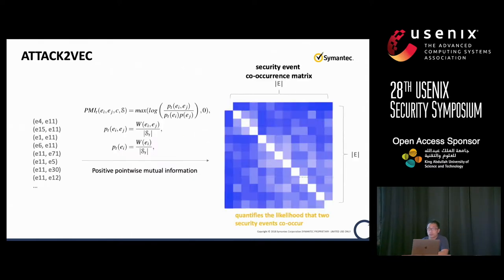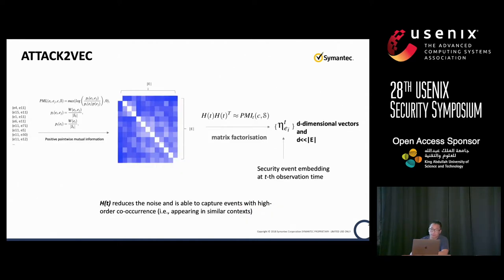From there, we will be able to get the co-occurrence tuples for security events surrounding, let's say, event 11. From the co-occurrence tuples, we leverage the positive pointwise mutual information (PPMI) — these three equations there generate the PPMI matrix — so we can quantify the likelihood that security events co-occur in the context window. Furthermore, we do matrix factorization to get a dense d-dimensional representation about each security event, reducing noise and capturing events with high-order co-occurrence, meaning security events appearing in similar contexts.